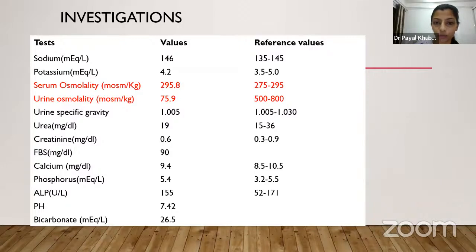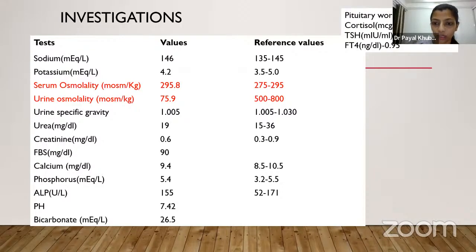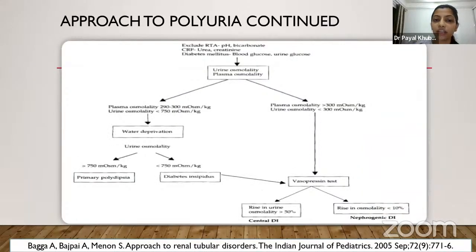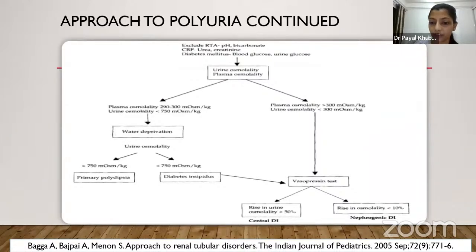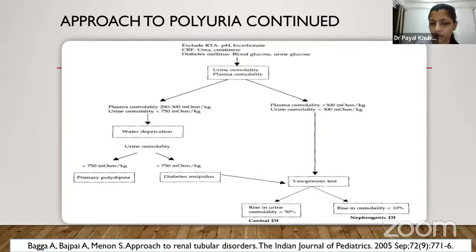Investigations: ABG, pH, bicarb, urea, creatinine were normal, ruling out RTA. Calcium, phosphorus were in the normal range. Serum osmolarity was 295.8 mOsm/kg and urine osmolarity was 75.9 mOsm/kg. Pituitary workup was normal. A plasma osmolarity greater than 300 or urine osmolarity less than 300 mOsm/kg confirms diabetes insipidus. In our case with plasma osmolarity 290-300, we proceeded to water deprivation test, followed by vasopressin challenge test to differentiate central from nephrogenic diabetes insipidus.